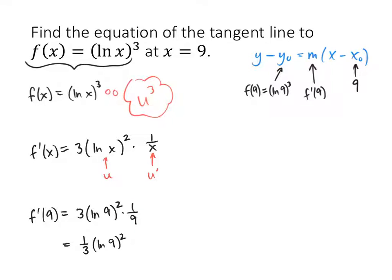So now I'm going back over to my equation of my tangent line, y minus y₀ equals m times x minus x₀. So now I substitute in. y₀ I figured out was natural log of 9 cubed. My m is 1 third times the natural log of 9 squared, and my x₀ is 9.